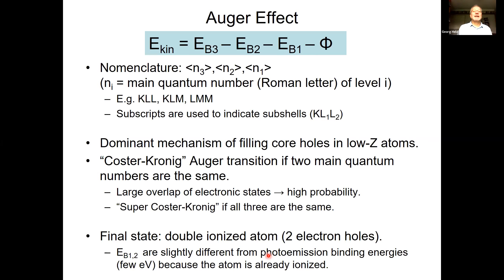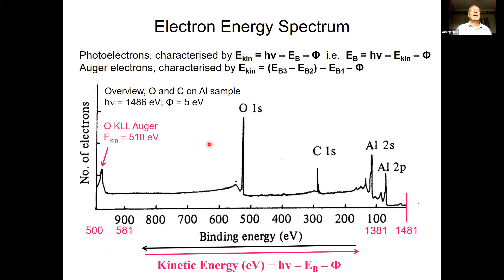That leaves us with two types of electrons in an electron energy spectrum. We have photoelectrons whose kinetic energy depends on the photon energy, and we have Auger electrons — for example KLL Auger electrons — alongside oxygen, carbon, and aluminium photoelectrons. I'll come back to that spectrum in a moment.